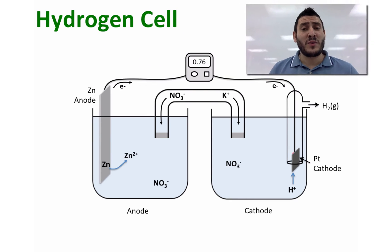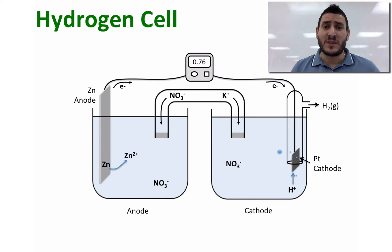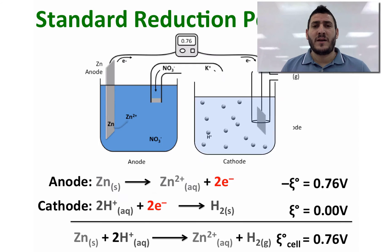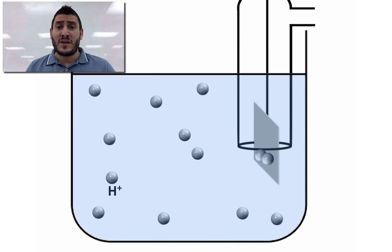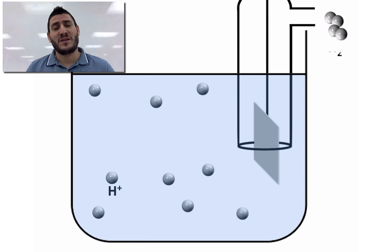Consider the following galvanic cell where zinc is at the anode and hydrogen is at the cathode. Zinc is getting oxidized and losing electrons, which are being transferred to the hydrogen at the cathode where hydrogen is getting reduced. Every two hydrogen ions will take two electrons to form hydrogen gas which will escape the solution.